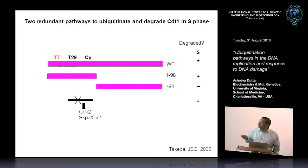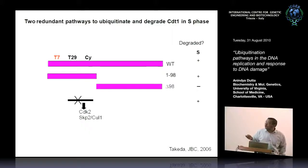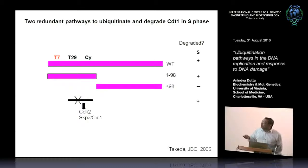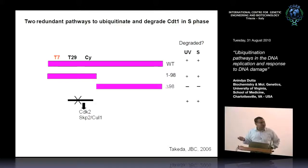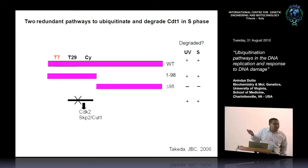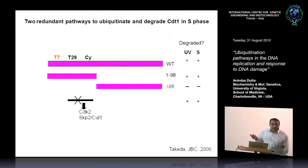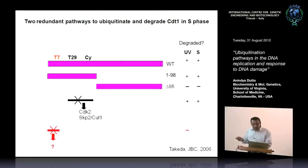We knew there was some other sequence responsible. Around this time, we got a chance discovery: people noticed that CDT1 was also degraded significantly after DNA damage — after UV radiation. That damage signal was also located in the first 98 amino acids and was not eliminated by mutating the black module. So we continued mutating sequences until we found something that would block degradation after DNA damage. It turned out this threonine was important.